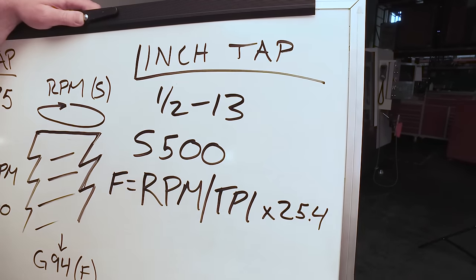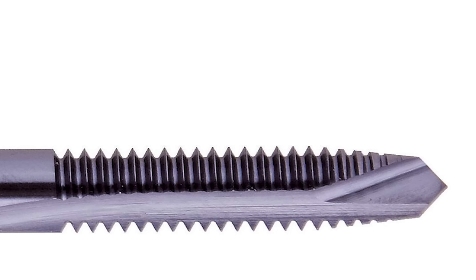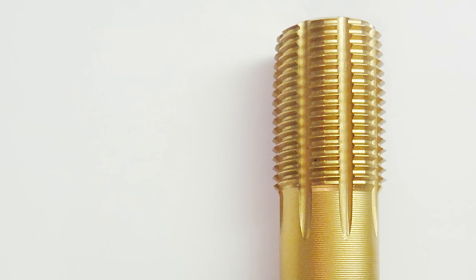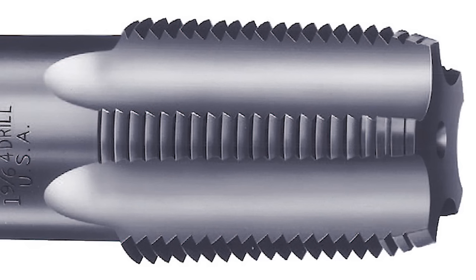Our formula is feed equals RPM divided by TPI times 25.4. Now this formula is going to work for all of your single start inch taps. We're talking about your cutting taps, your form taps, and even those NPT tapered pipe taps.